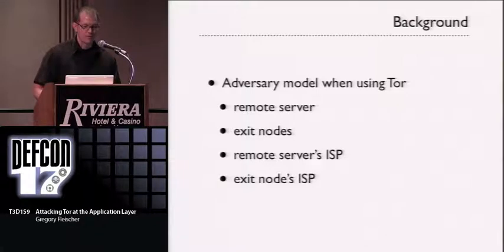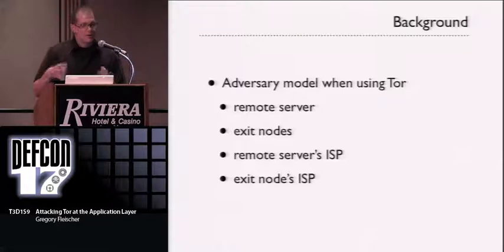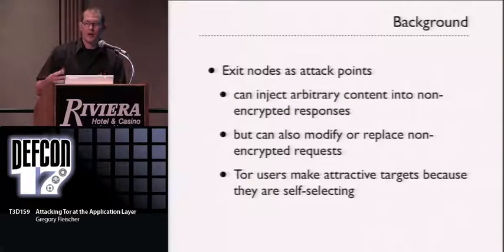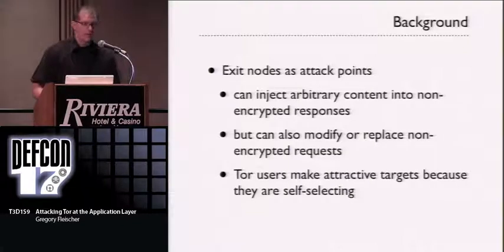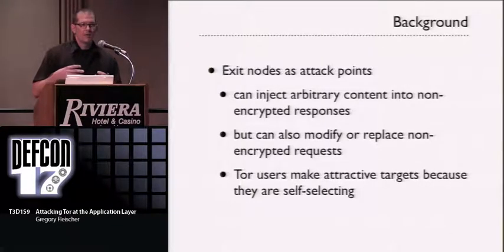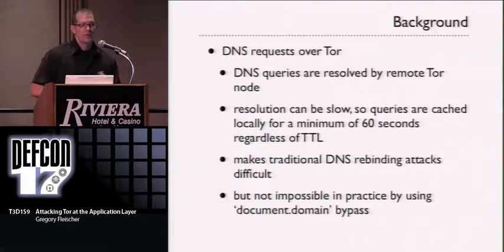Let's talk about the adversary model when using Tor. There are certain points in the Tor network where you're at risk at the application layer: the remote server, any exit nodes, the remote server's ISP, and the exit node's ISP. Exit nodes can be attack points — not just passive monitoring, but you can actually inject content into both requests and responses. This has been done in the past. Tor users make an attractive testbed for man-in-the-middle attacks, and since they're self-selecting, only Tor users are affected.